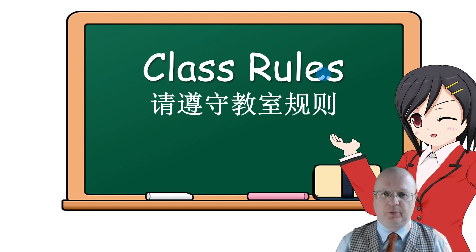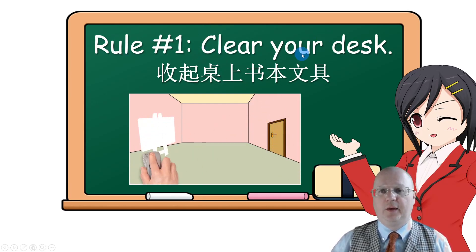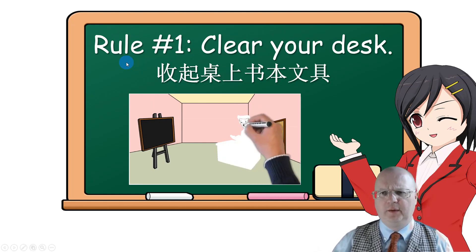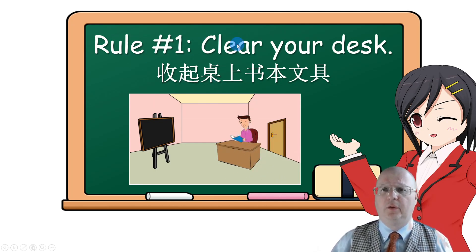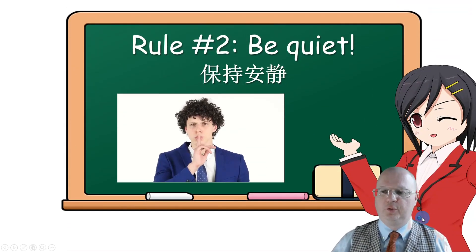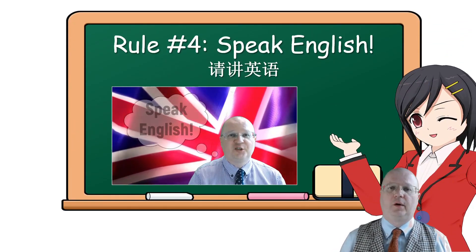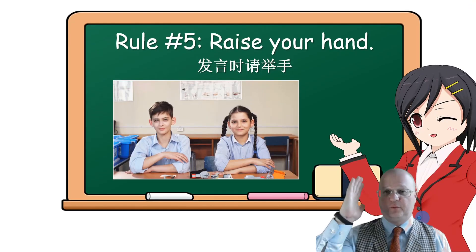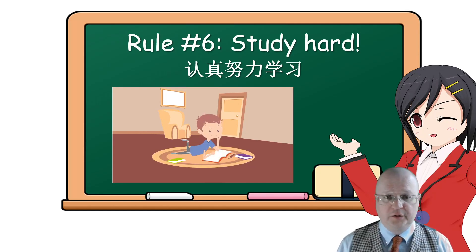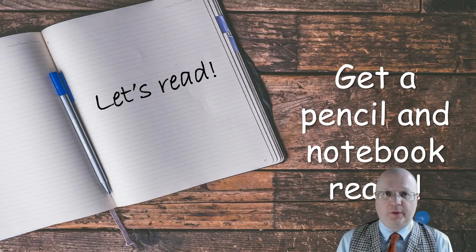I always start with class rules. When you go through the class rules, do not just read them — elicit the answers from your students. Instead of reading rule number one, ask your students what rule number one is and they should read it back to you. Rule one: clear your desk. Rule two: be quiet. Rule three: listen to the teacher. Rule four: speak English. Rule five: raise your hand. Rule six: study hard. In my classes, students are required to bring a pencil and notebook so they can take notes. Note-taking is super important because they can always refer to their notes before the final exam.